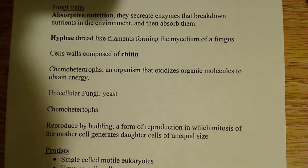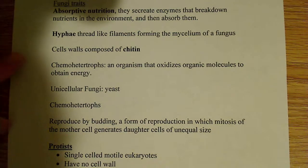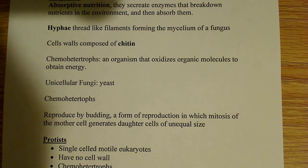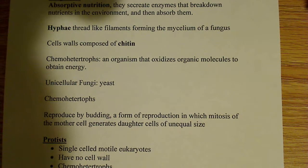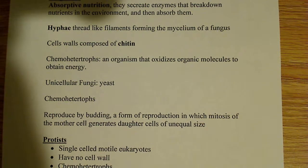Yeast are also chemoheterotrophs, and they reproduce by a unique type of reproduction called budding — a form of reproduction in which mitosis of the mother cell generates daughter cells of unequal size.